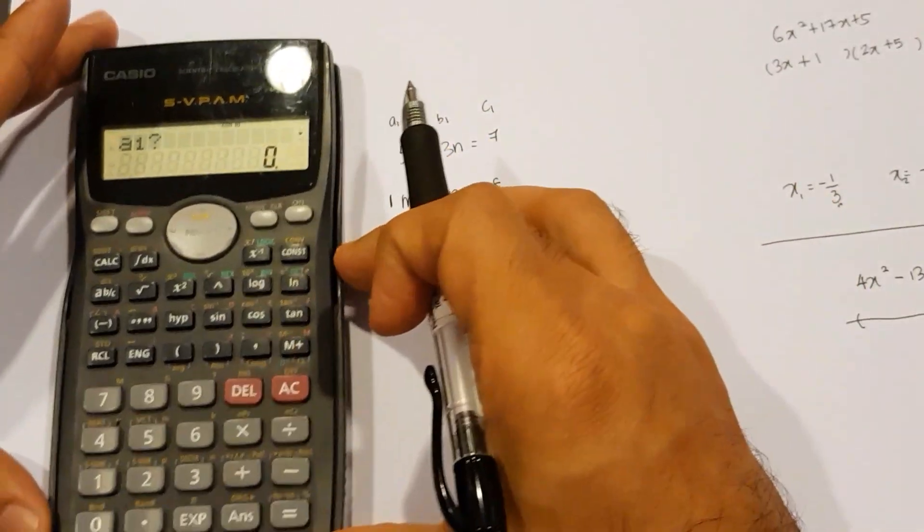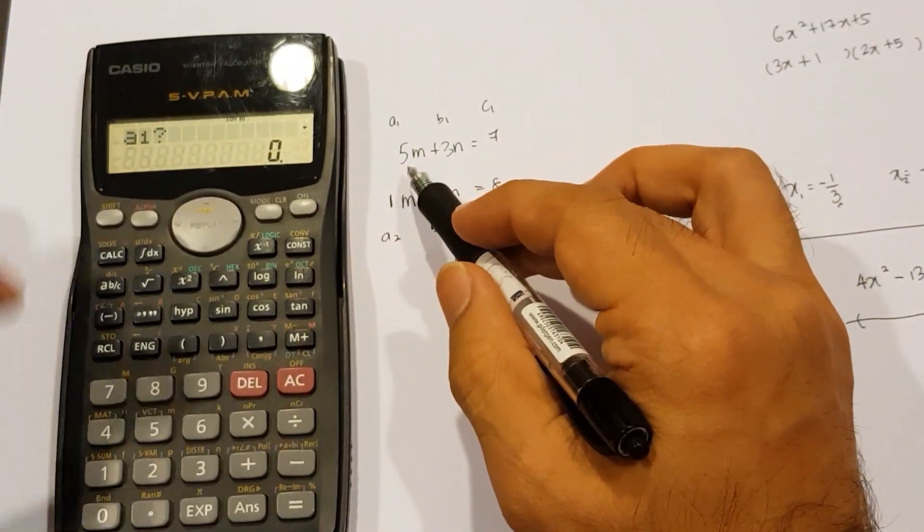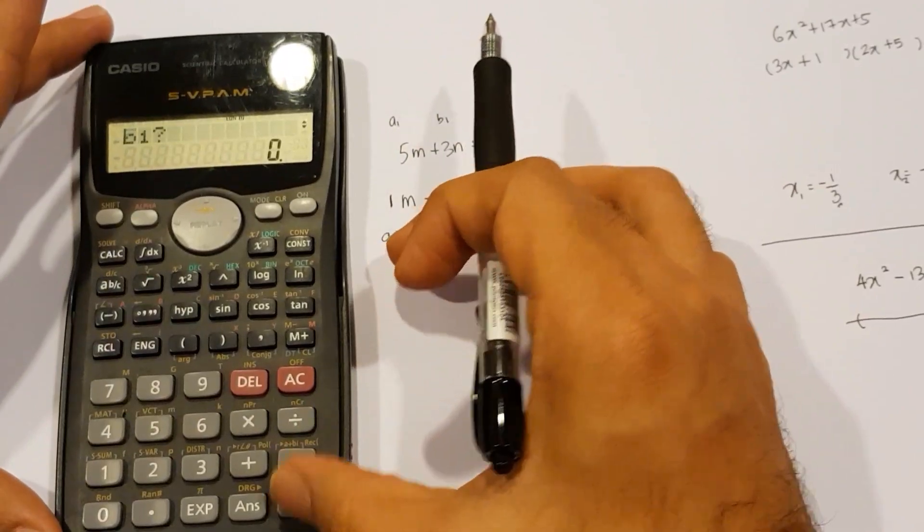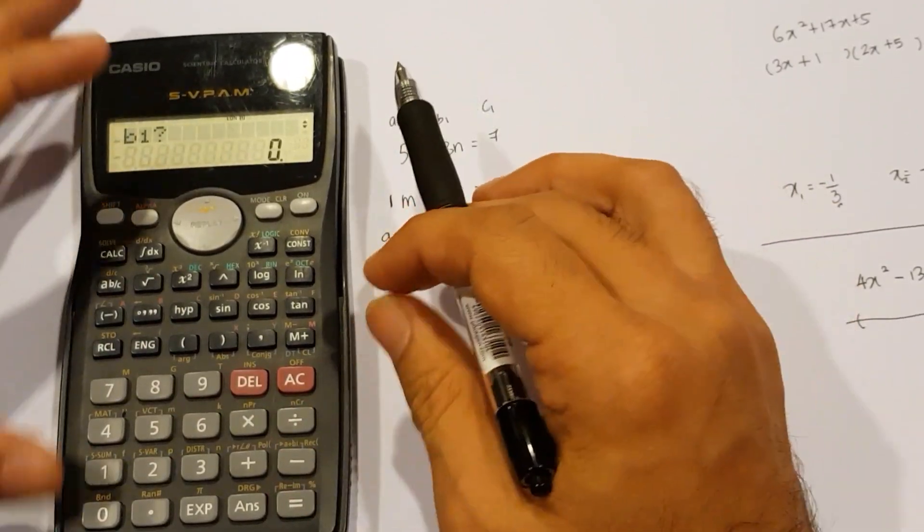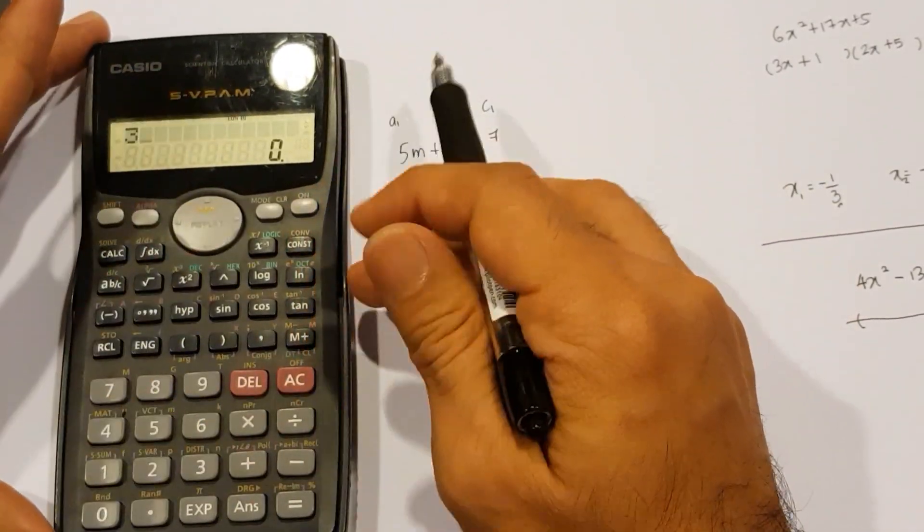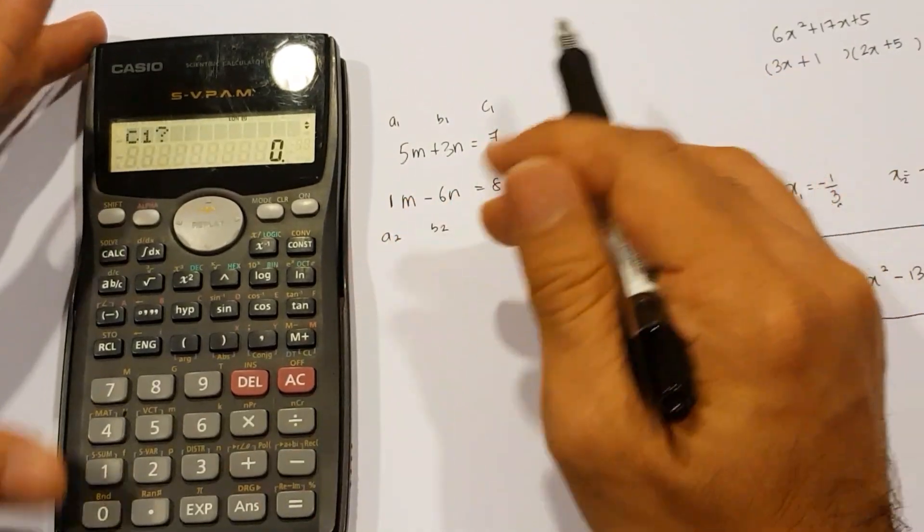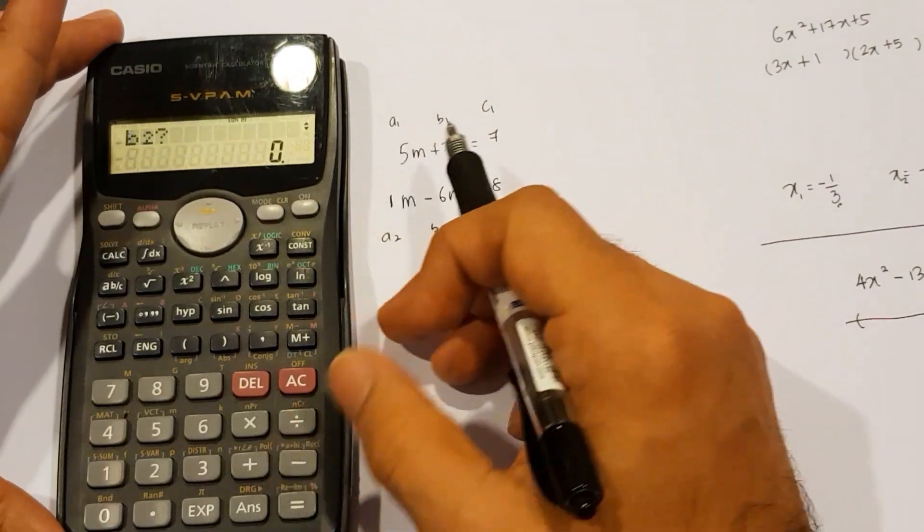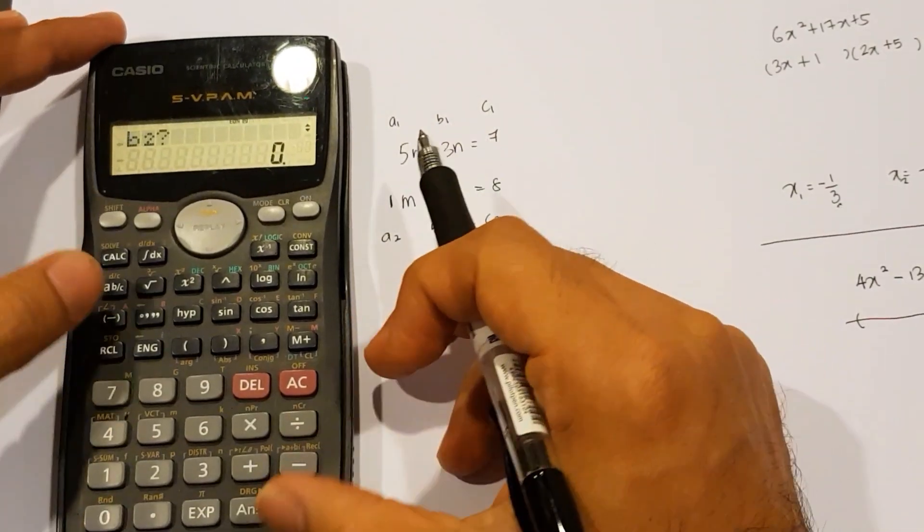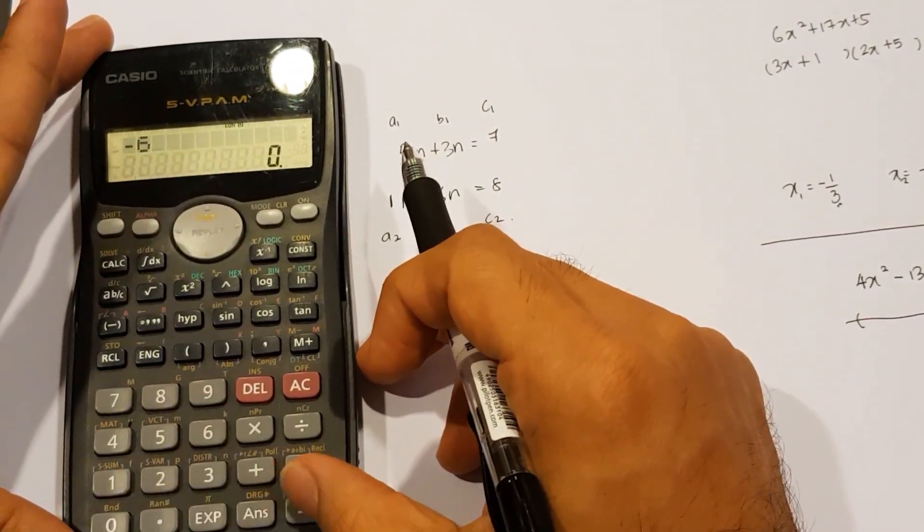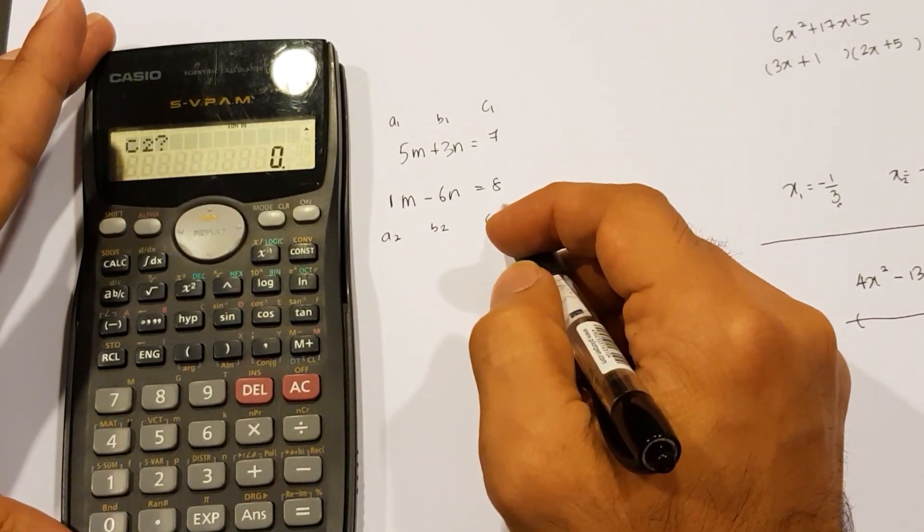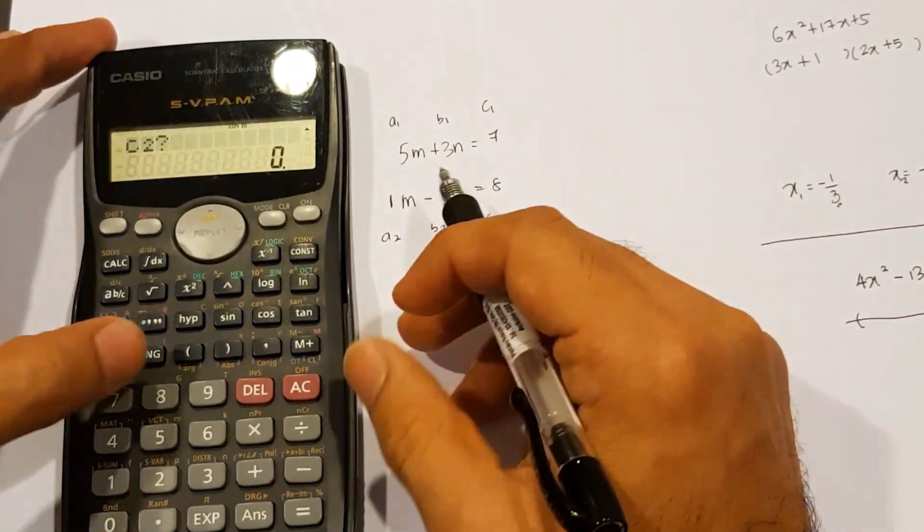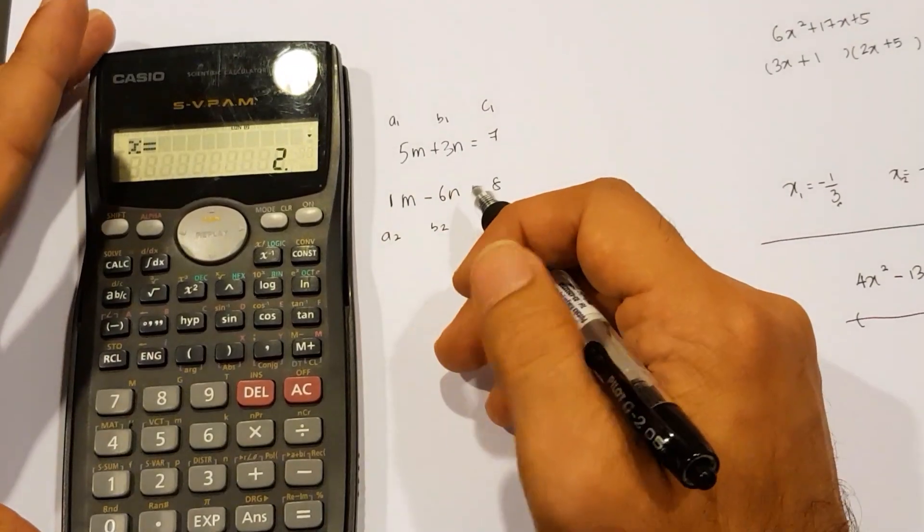Let's go ahead and type in A1, that's 5, equal, B1 is 3, so 3, equal, C1 is 7, so that's 7, equal, A2 number is 1, equal, B2 number is negative 6, so negative 6, equal, and then C2 number is 8, so 8 and equal.